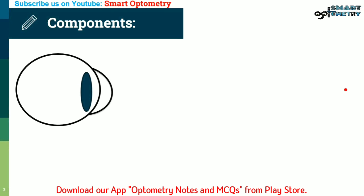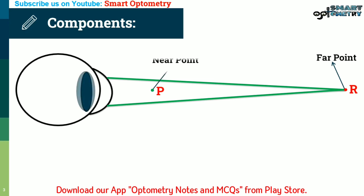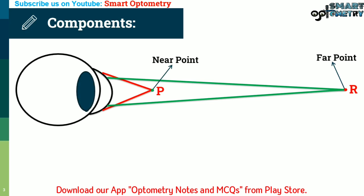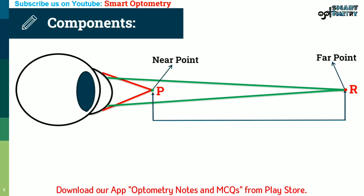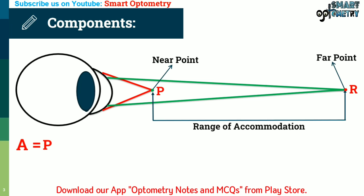The components of accommodation are as follows. Far point is the position of an object when its image clearly falls on the retina with no accommodation — 6 meters to infinity is considered the far point. The nearest point clearly seen with maximum accommodation is called the near point, which varies with age. The distance between the far point and near point is called the range of accommodation. The difference between the dioptric power needed to focus at the near point (P) and the far point (R) is called the amplitude of accommodation.